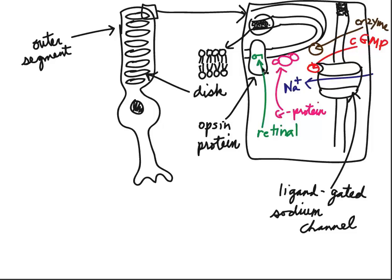This is an opsin protein. The section that responds to light is known as retinol. This represents a G protein, and this circle represents an enzyme. The red circle represents a chemical called cyclic GMP, which sits in a binding site on this channel — a ligand-gated sodium channel, where the binding site is inside the neuron rather than outside. It opens in the presence of cyclic GMP.